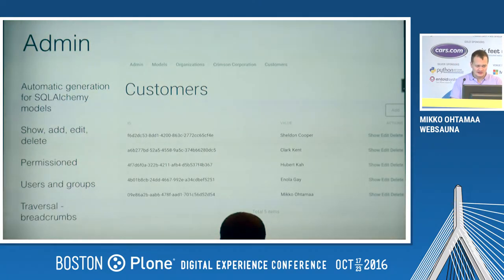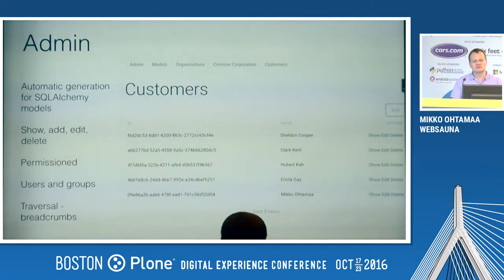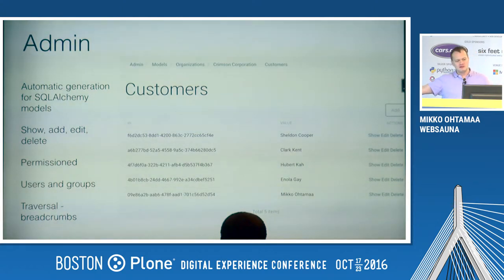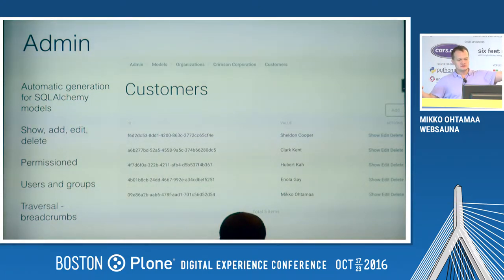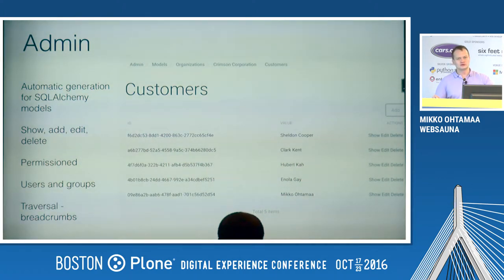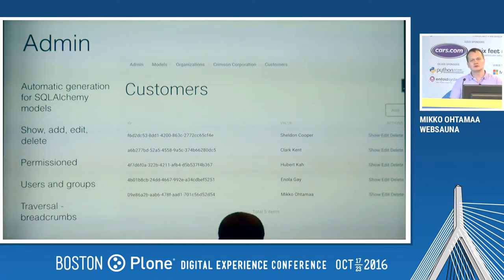The admin interface, unlike Django's, is based on traversal. So you can actually have multiple levels of paths — for example, an organization, under it customers, and under customers, orders. This kind of flexible hierarchy is something Django can't do because all its URLs are hardcoded.